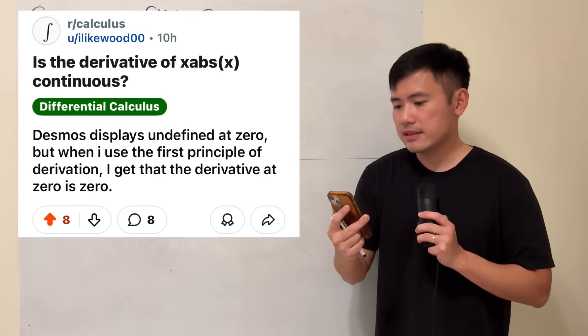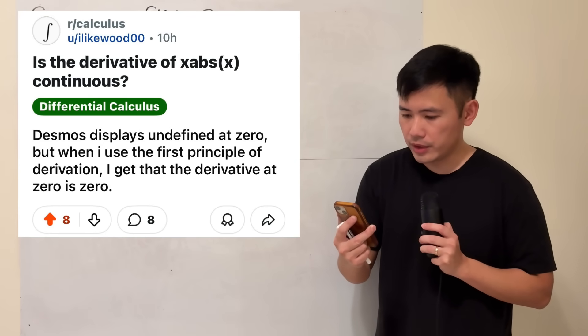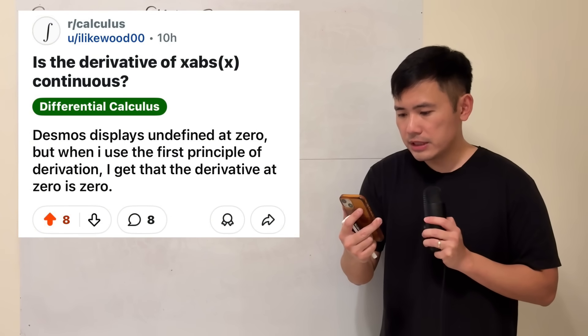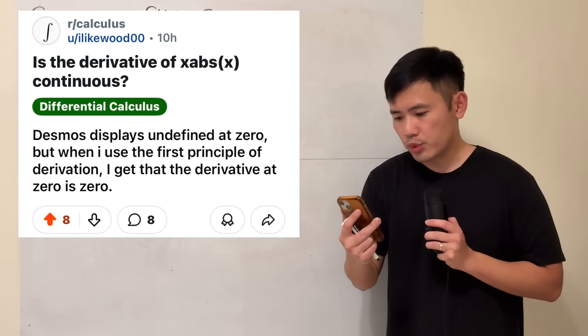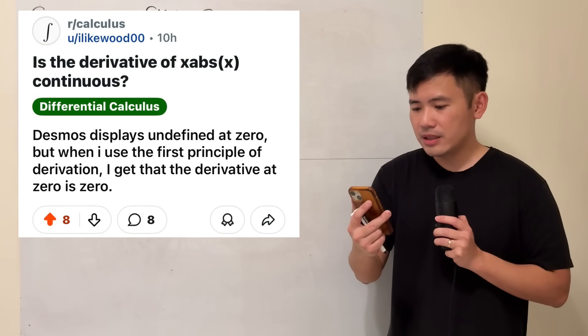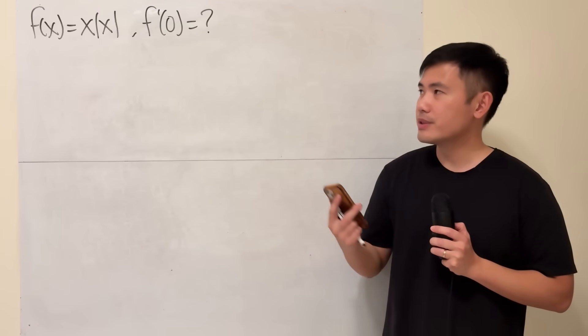Is the derivative of x times the absolute value of x continuous? Desmos displays undefined as 0, but when I use the first principle of derivative, I get the derivative at 0 is 0. So let's have a look.